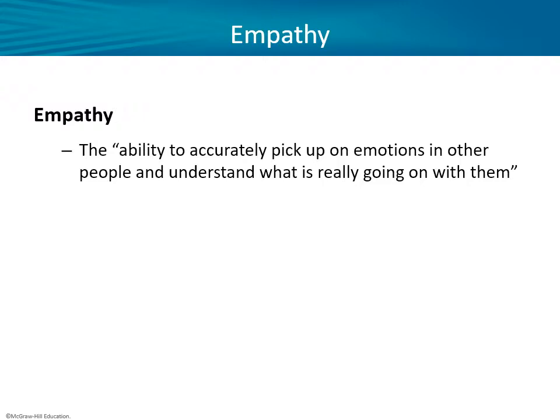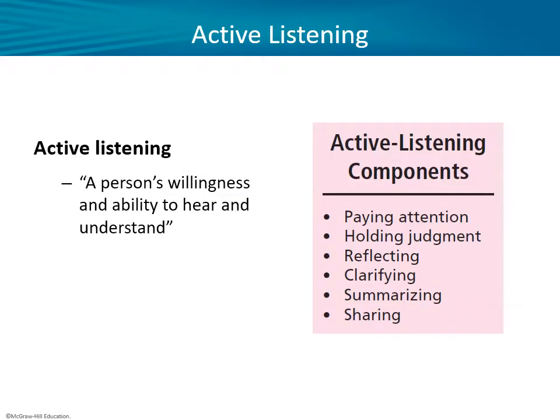Moving on to empathy — the ability to accurately pick up on emotions in other people and understand what is really going on with them. It's a really crucial and difficult skill. People frequently misread emotions or are too dismissive of them. If you're not able to recognize when someone is highly emotionally charged — or conversely, when someone seems strangely calm — that can get you into a lot of trouble. And this is where we get into active listening, which I think is so vital.